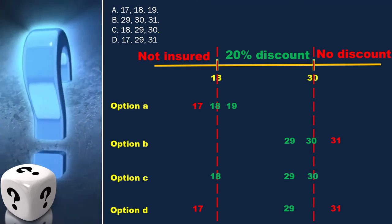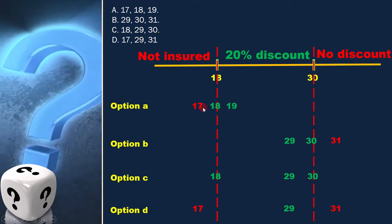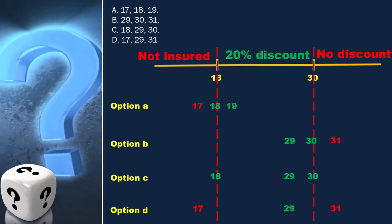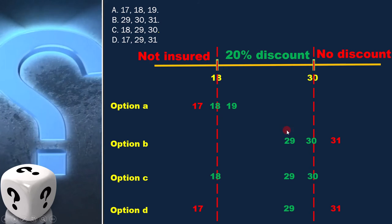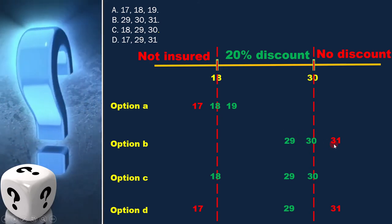In option A, 17 is in different class and 18 and 19 are in different class. In option B, 29 and 30 are in one class and 31 is in different class.